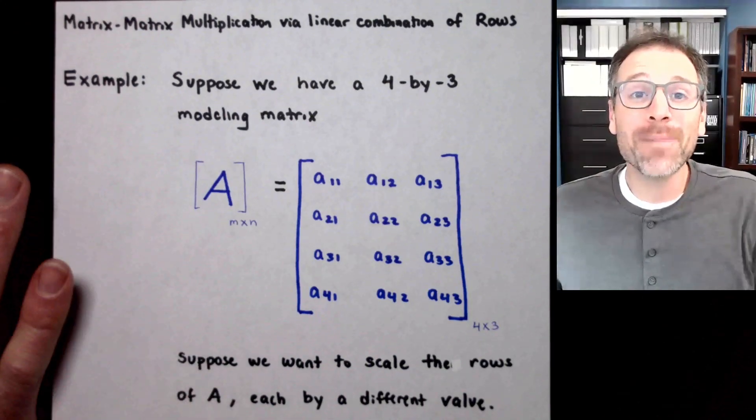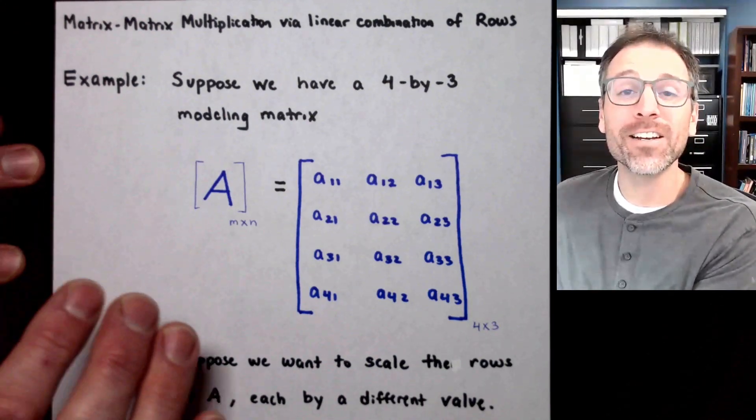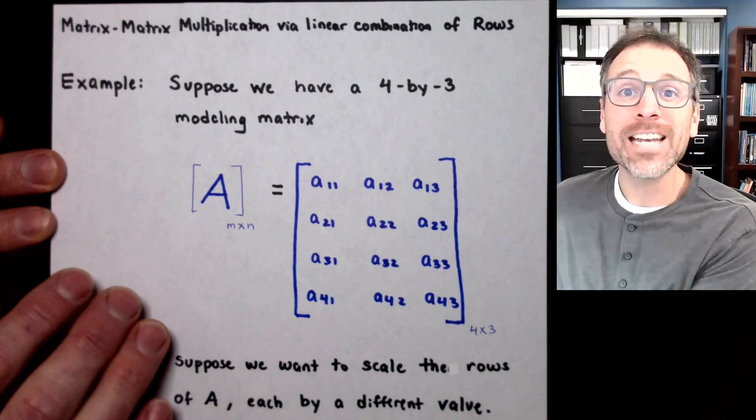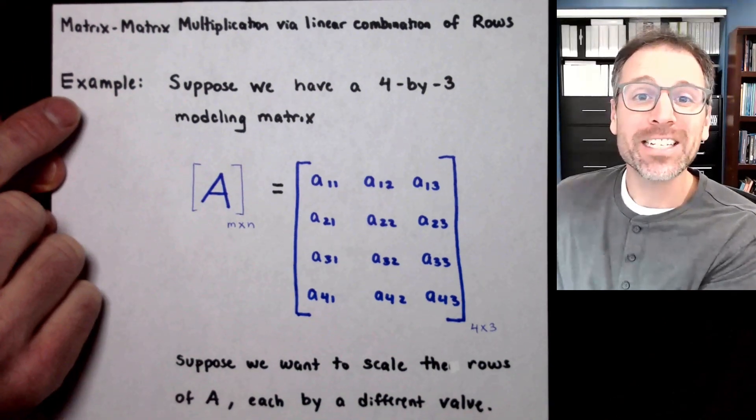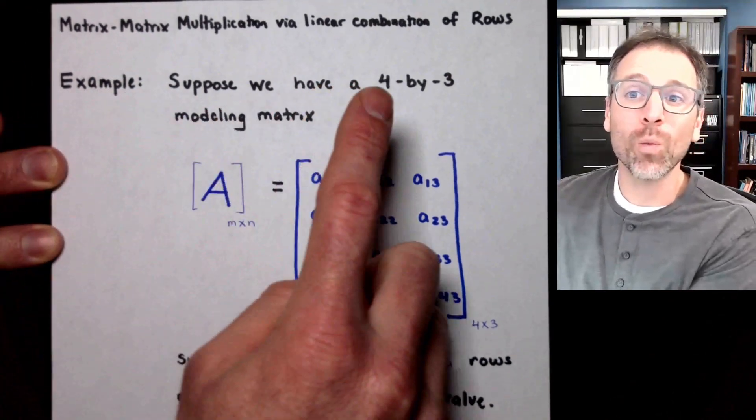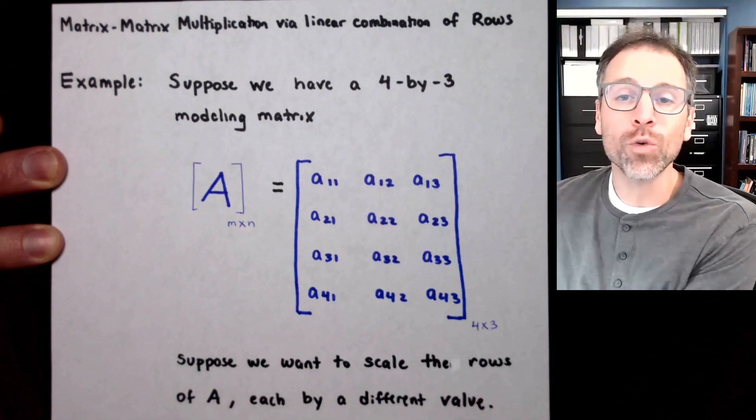Let's take a look at how to use matrix-matrix multiplication via linear combination of row vectors under pressure. This is example one, and we'll start with a four by three general modeling matrix.